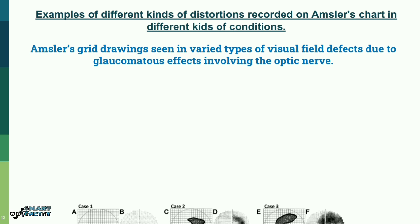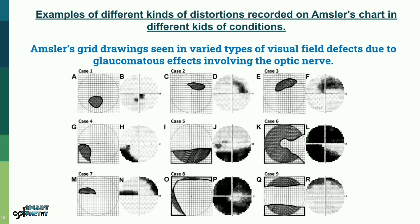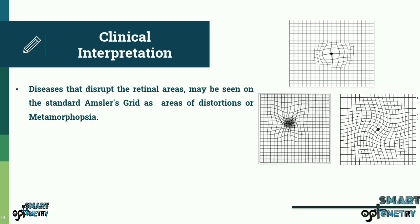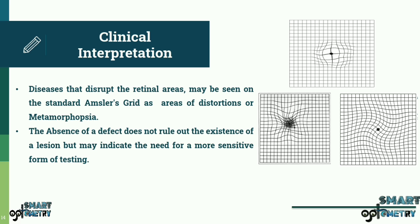Another example shown here are the Amsler's grid drawings seen in varied types of visual field defects due to glaucomatous effects involving the optic nerve. Diseases that disrupt the retinal areas may be seen on the standard Amsler's grid as areas of distortions or metamorphopsia. The absence of a defect does not rule out the existence of a lesion but may indicate the need for a more sensitive form of testing.